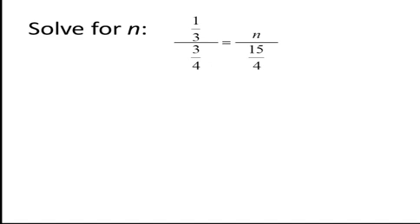We use the fact that in a proportion the product of the means equals the product of the extremes. Therefore, 1 third times 15 fourths is equal to 3 fourths times n.